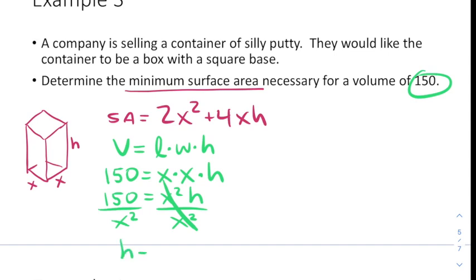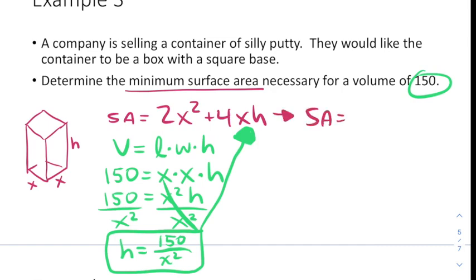Now this can be plugged into the surface area function to get rid of h. So our surface area equals 2x squared plus 4x, and instead of h we're going to write 150 divided by x squared.